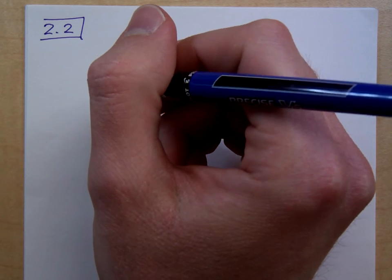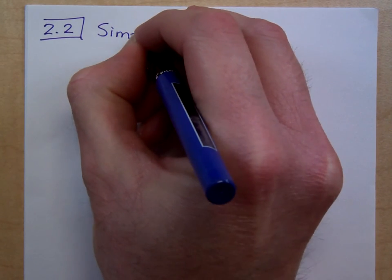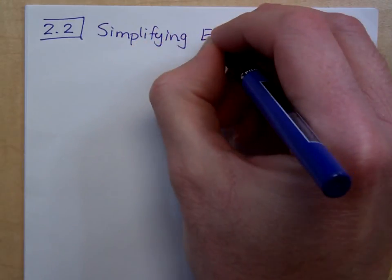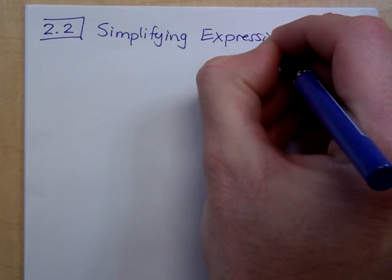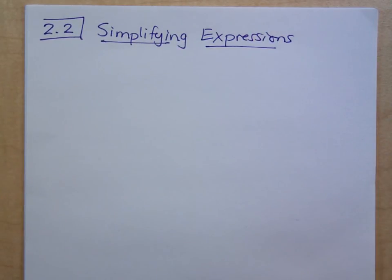It's time for another video. In this section we want to look at simplifying expressions. Fortunately for us, we've already talked about like terms and how to identify like terms, and all we're doing here in this section is combining like terms—how do we add and how do we subtract them. It's much the same way that we would have done with regular numbers; you just pay attention to the coefficients.